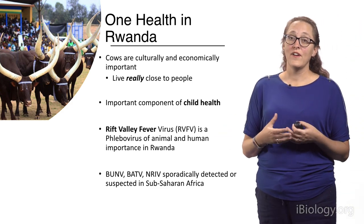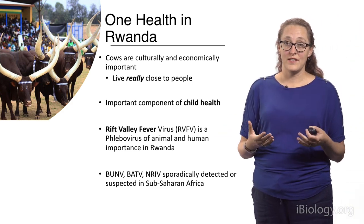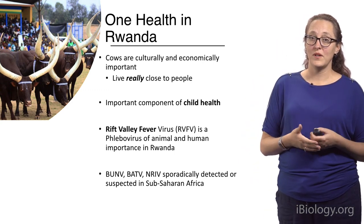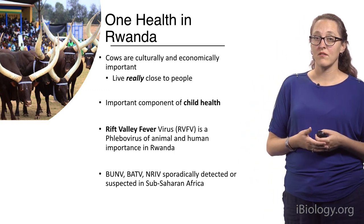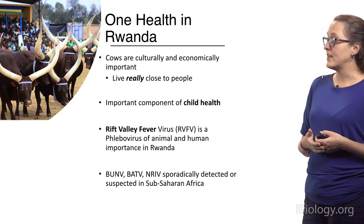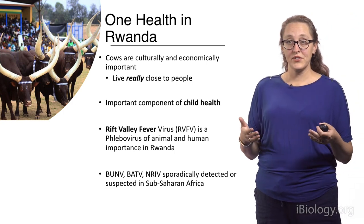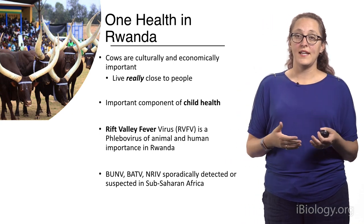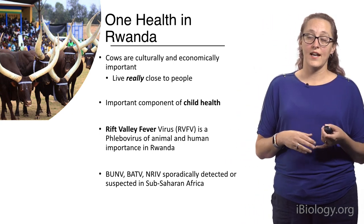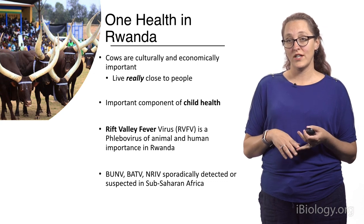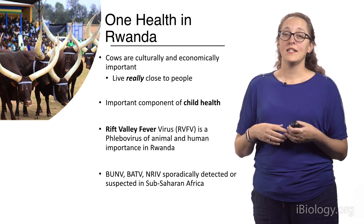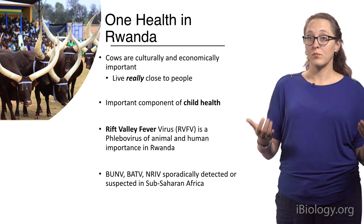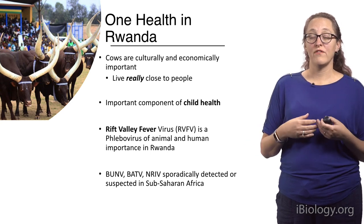What they also have in Rwanda, and in general in Sub-Saharan Africa, is Rift Valley Fever. Rift Valley Fever virus is a phlebovirus, which is a type of bunyavirus, of animal and human health importance in Rwanda. This virus is cyclical, it's seasonal, and it causes outbreaks in cattle that manifest as abortions or as hemorrhagic fever. It's also been called the disease of abattoirs — like a butcher — or veterinarians.